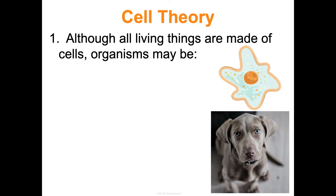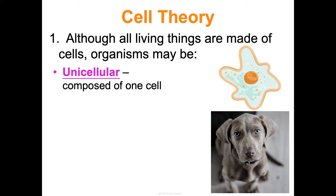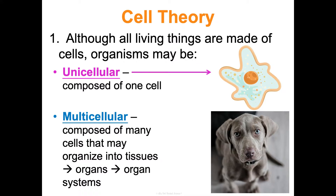Although all living things are made of cells, as cell theory states, organisms are either unicellular or multicellular. Unicellular means you're made of just one cell — bacteria and protists are literally just one single cell. Other organisms are multicellular, much more complex, made of trillions of cells like humans, organized into tissues, organs, organ systems, making up the entire organism.